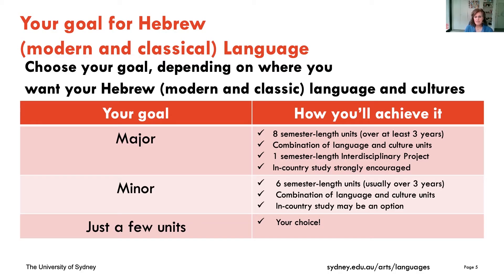A minor is similar to a major but contains six semesters. Again, there's a combination of language and culture units, and we strongly encourage you to take an in-country option — again, referring to Israel.